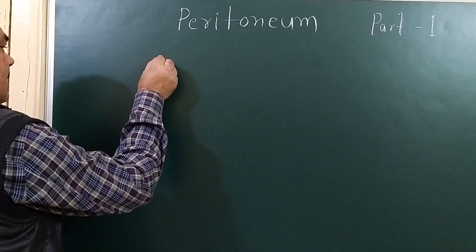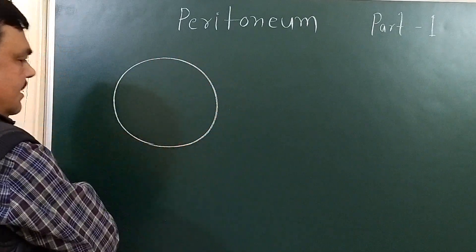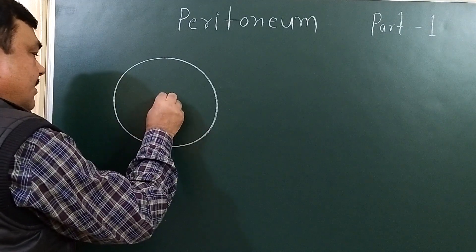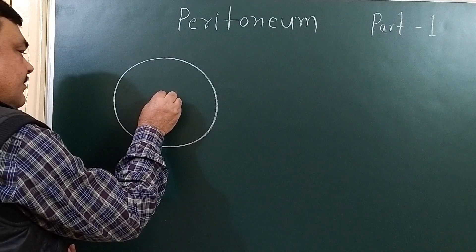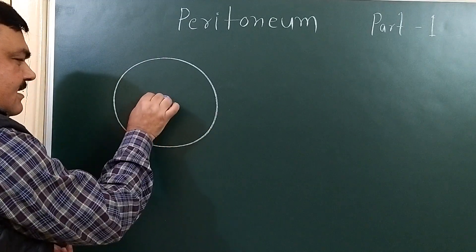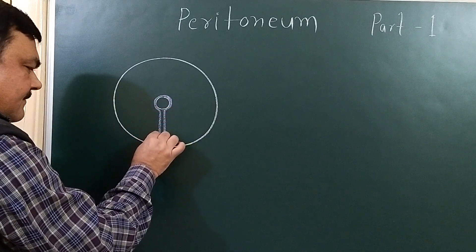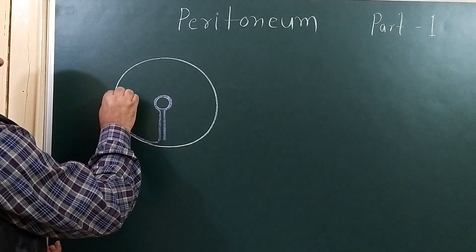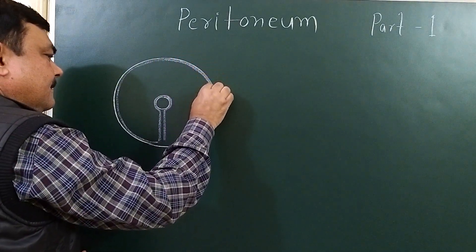Here is a transverse section of the abdominal cavity. This is the abdominal wall, and here is the position of a loop of intestine — this is viscera. This is the peritoneum; it covers the viscera from the outer side. And this is a fold of the peritoneum. This is the wall of the abdominal cavity; it covers the abdominal cavity from the inner side — this is the inner side of the abdominal wall and pelvic wall.